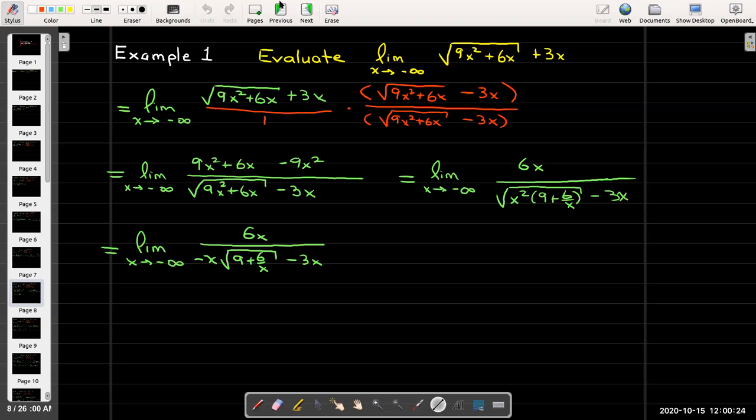As I've done in the past I'll multiply top and bottom by 1/x which leaves me with the limit as x approaches negative infinity of 6 over negative √(9 + 6/x) then minus 3. And now I can say that as x goes to infinity 6/x will go to 0.